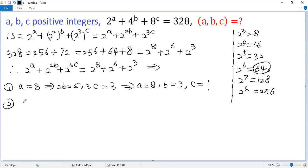The second case: if a equals 6, then 2b can only be 8 because 2b cannot be 3. So 2b equals 8, 3c equals 3. So the second solution would be a equals 6, b equals 4, c equals 1.